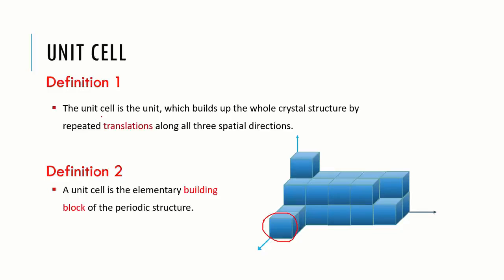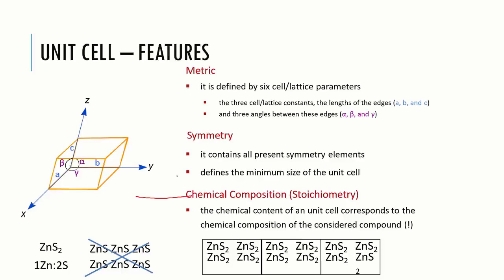Thus, a valid unit cell is that which fills the space completely. A unit cell is the elementary building block of the periodic structure. A unit cell is defined by six lattice parameters: the three lattice parameters defining the unit cell are the lengths of sides, and other three are angles between these sides. For instance, the unit cell must have zinc and sulfide in 1 to 2 ratio.